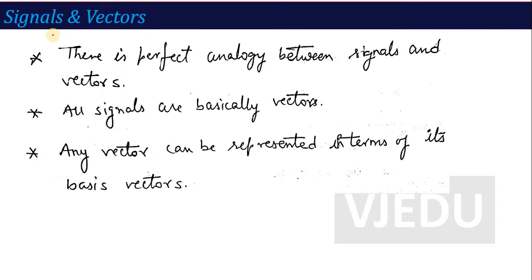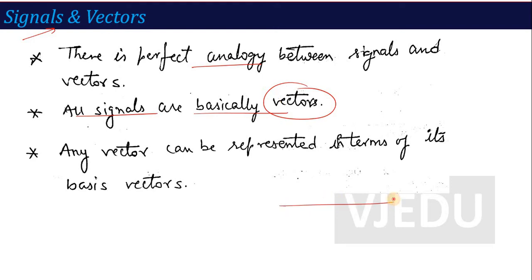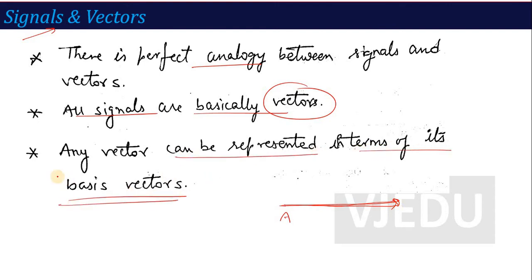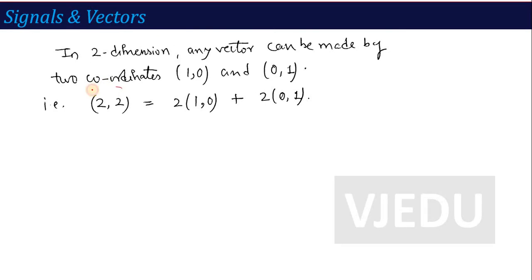The first term is signals and vectors. Signal and vector are analogous — there are many similarities. In general, all signals are basically vectors — all signals are in vector form. If I talk about vector here, then we have a physical quantity in physics. In physics, I have studied what a vector is.